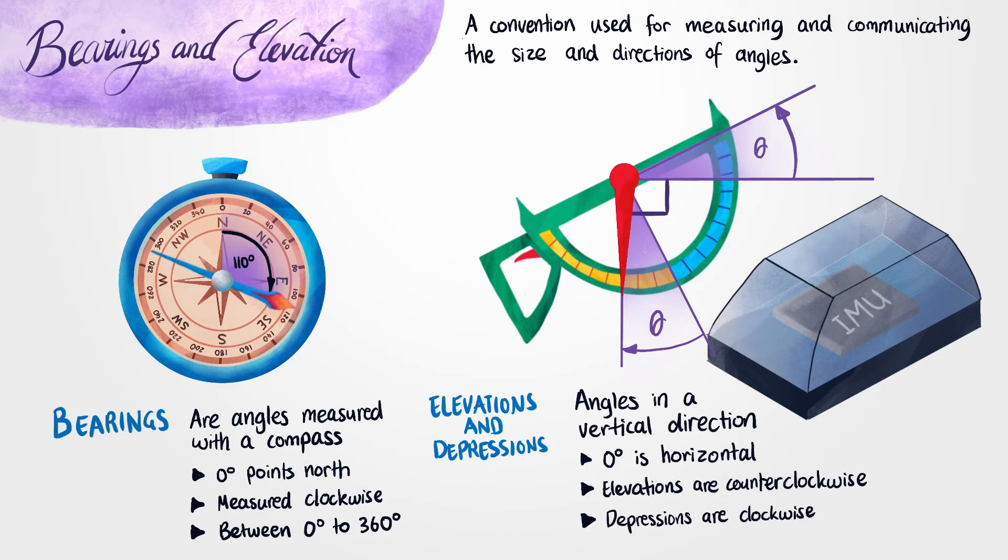Now if we go ahead and look at the angle on our clinometer over here, we can see that it's approximately equal to 30 degrees. Since it points counter-clockwise, we also say that it's an angle of elevation. Now I'll give you another example of when you could use an angle of elevation or depression yourself.